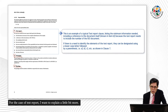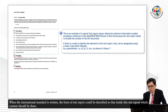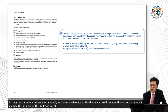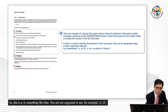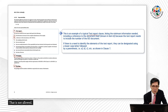For the case of the test report, I want to explain a little more. This is an example of a typical test report. When an international standard is written, the form of a test report could be described — listing the minimum information needed, including a reference to the document itself, because the test report needs to include the ISO document number. If there is a need to identify the elements of the test report, they can be designated using a lowercase letter followed by a parenthesis — a), b), c), and so on, as shown in clause 7. You are not supposed to use numbered parentheses like 1) or 2).